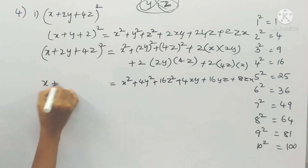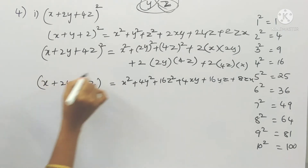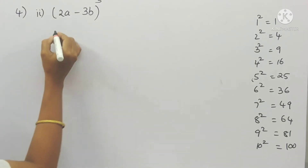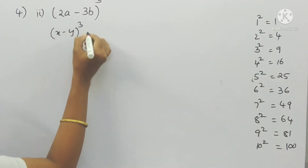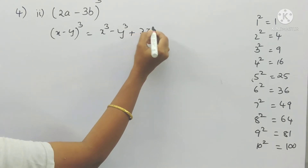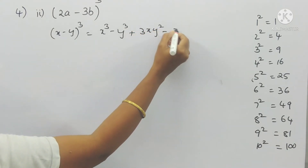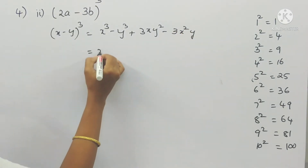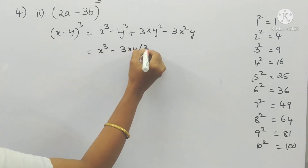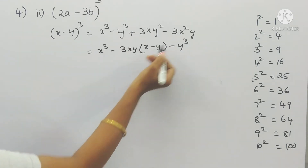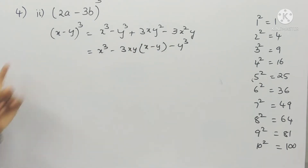So this is (x + 2y + 4z)² expanded. The second one: (2a - 3b)³. This is clearly in the form of (x - y)³. The formula is: x³ - 3x²y + 3xy² - y³. So actually this is the formula.